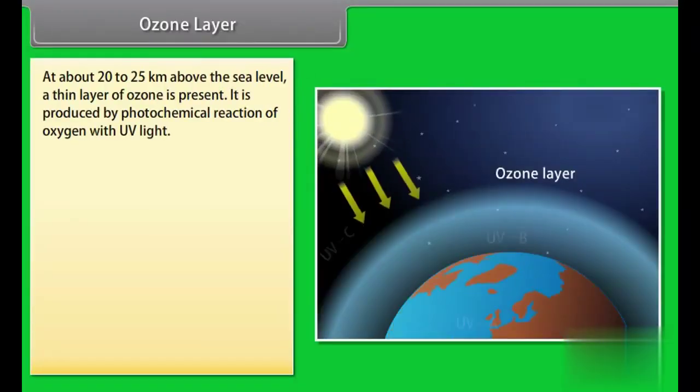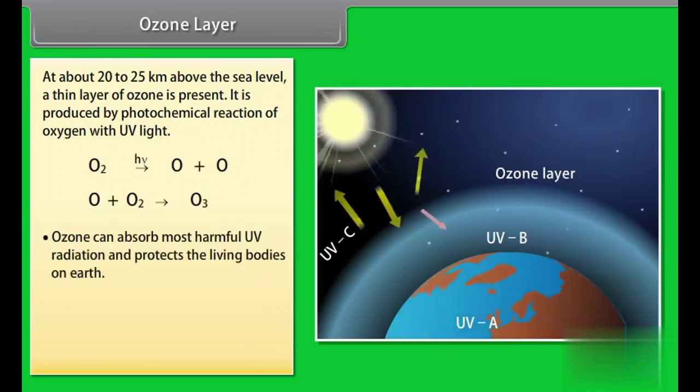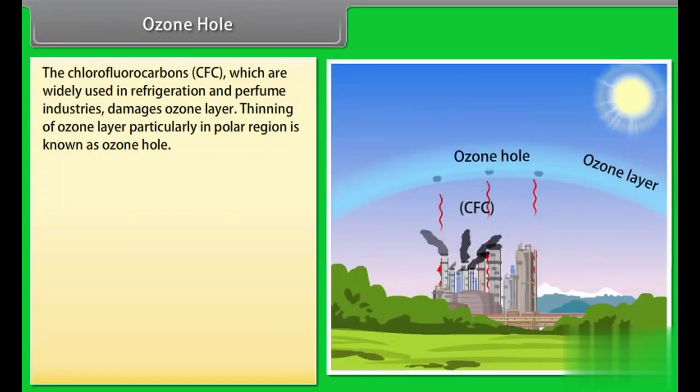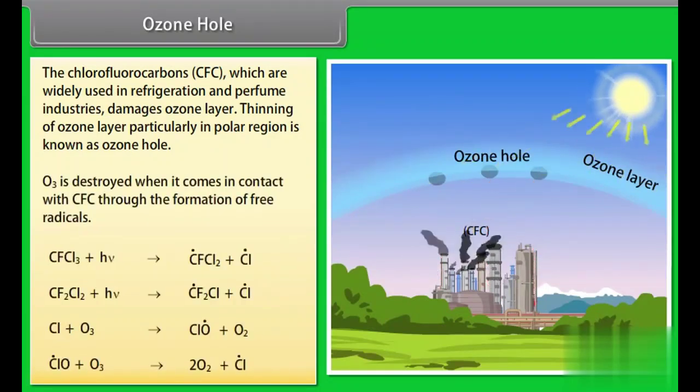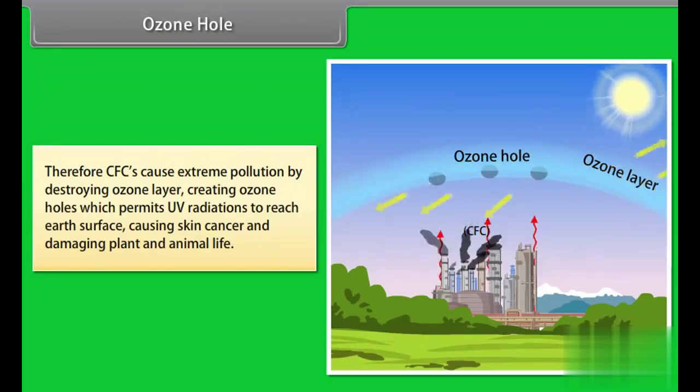Ozone layer. At about 20 to 25 km above the sea level, a thin layer of ozone is present. It is produced by photochemical reaction of oxygen with UV light. Ozone can absorb most harmful UV radiation and protects the living bodies on Earth. In absence of ozone layer, living bodies will suffer serious radiation hazards, such as skin cancer. Ozone hole: The chlorofluorocarbons, which are widely used in refrigeration and perfume industries, damage ozone layer. Thinning of ozone layer, particularly in polar region, is known as ozone hole. O3 is destroyed when it comes in contact with CFC through the formation of free radicals. Therefore, CFCs cause extreme pollution by destroying ozone layer, creating ozone holes which permit UV radiations to reach Earth's surface, causing skin cancer and damaging plant and animal life.